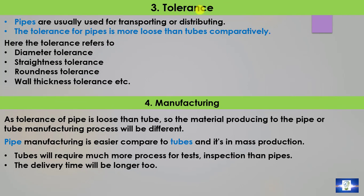Point 3: Tolerance. There are different tolerances including diameter tolerance, straightness tolerance, roundness tolerance, and wall thickness tolerance. Considering these tolerances, pipes are usually used for transporting and distributing, and the tolerance for pipes is more loose than for tubes comparatively.